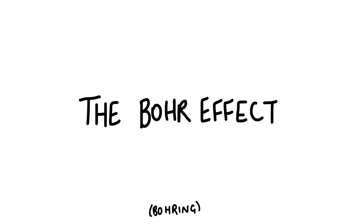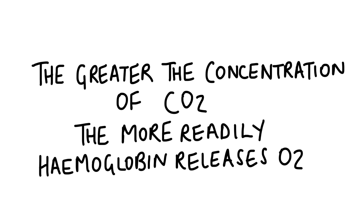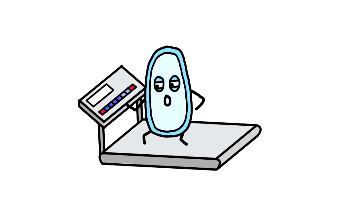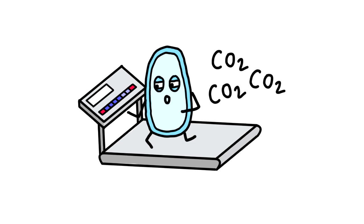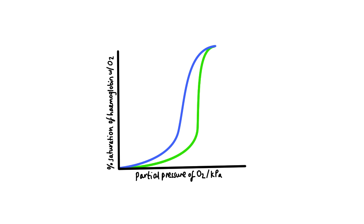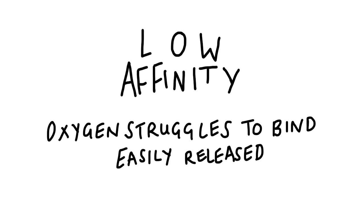The Bohr effect is something else you need to remember. The greater the concentration of CO2, the more readily hemoglobin releases oxygen. When cells respire, they produce carbon dioxide, which raises the partial pressure of CO2. Since there's a greater concentration of CO2 in respiring tissues, the rate of unloading by hemoglobin increases. Therefore, the curve shifts to the right, because hemoglobin now has a low affinity and can unload oxygen easily.